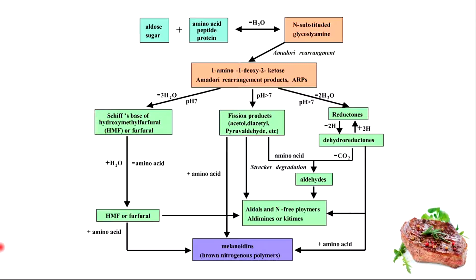When aldoses or ketoses are heated with amines, a variety of reactions ensue producing numerous compounds, some of which are flavors, aromas, and dark-colored polymeric materials, while both reactants disappear slowly. The generated flavors, aromas, and colors may be either desirable and important for some foods or unintended and undesirable in others. They may be produced slowly during storage or much more rapidly at the high temperatures encountered during frying, roasting, or baking.